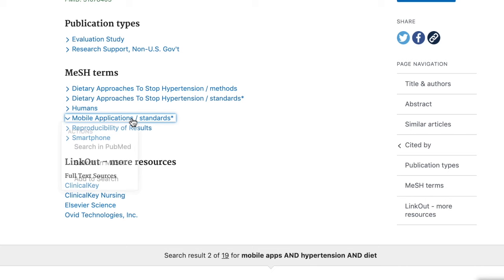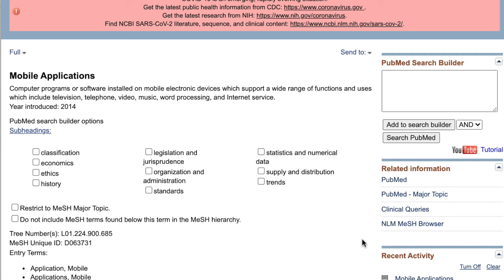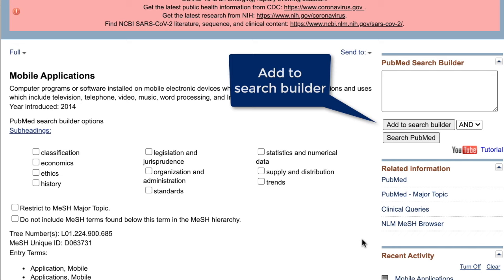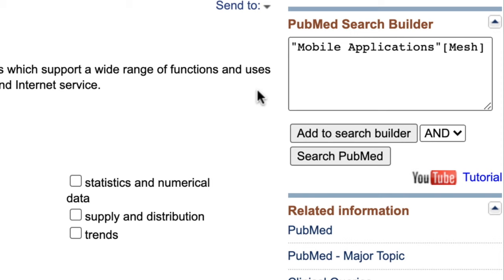You're now in the MeSH database where you can look more closely at the heading. Below the term is a definition and the year it was introduced. Read through the definition and if everything looks good, click on the Add to Search Builder button on the right-hand side of the screen. Notice that PubMed puts the term in double quotes and adds the language, bracket, MeSH, bracket. This is the syntax that PubMed needs so that it knows to search the term as a MeSH. Copy and paste exactly what you see in this box into your Word document.